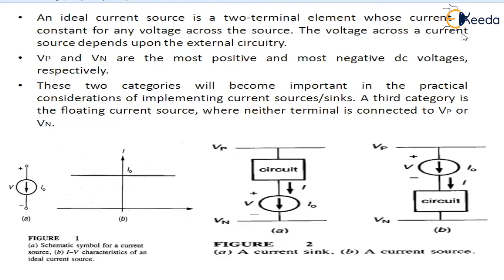Most current source applications require one of their terminals to be connected with the most positive or the most negative DC voltage in the circuit, and this leads to two possible configurations. Vp and Vn are the most positive and most negative DC voltages.